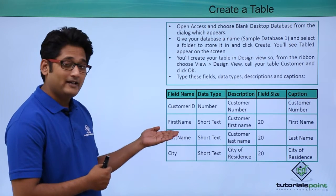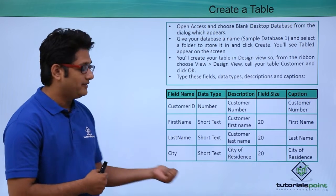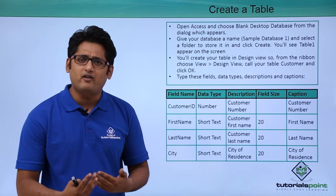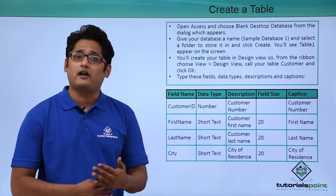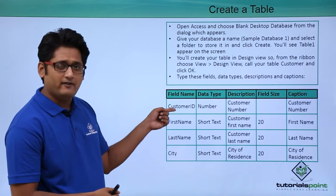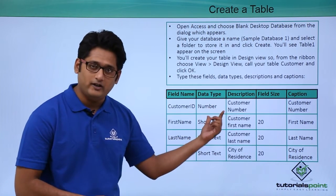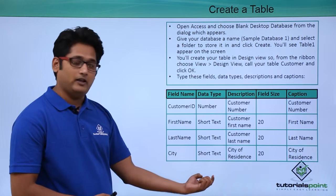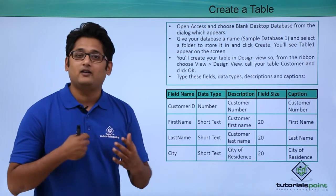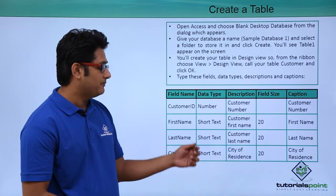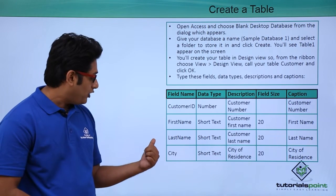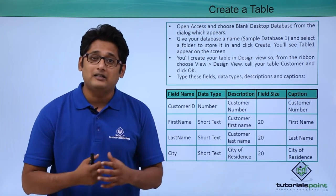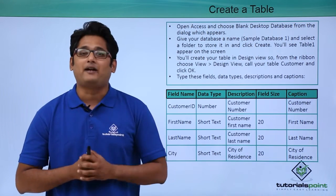In the design view, we have all the field list we will be requiring. For example, we are creating a table for customers. We have a customer ID as a unique record, then first name, last name, and city. We also define the data types — customer ID is a number, and first name, last name, and city are all short text.